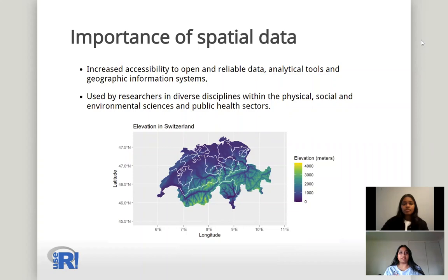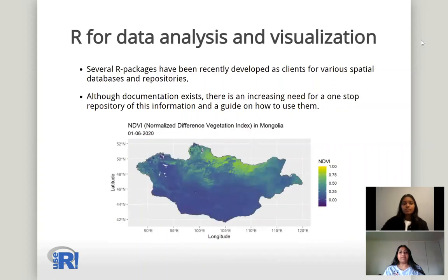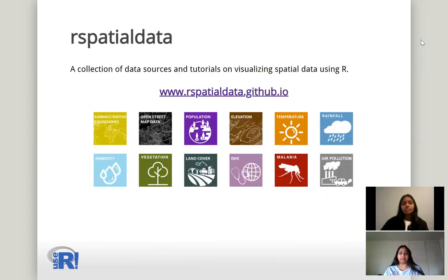R for data analysis and visualization. There are many R packages that have been recently released as clients for different spatial data repositories. Although there are documentations for each of them, there is an increasing need to have a one-stop repository on how to visualize these spatial properties and tutorials on how to use them in their own projects. So this brings us to our project, R Spatial Data, which is a website holding tutorials on different R packages used for visualizing spatial data. You can find it at www.rspatialdata.github.io.